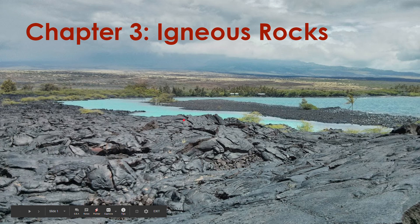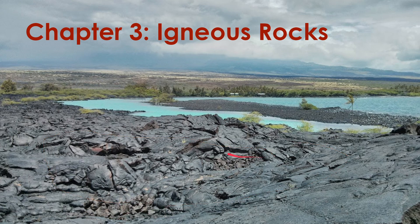Welcome to Chapter 3. After looking at all those minerals, we're now going to move into rocks. With Chapter 3, we begin with the first of the three rock types: igneous rocks. We're going to split igneous rocks into two chapters — starting with intrusive igneous rocks, and then moving to extrusive igneous rocks, which are volcanoes for the most part.